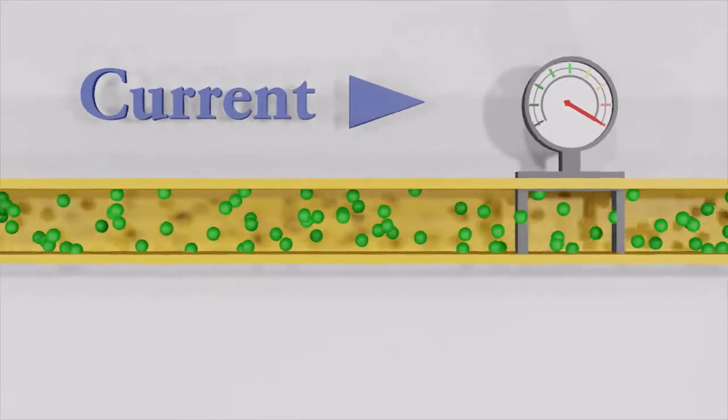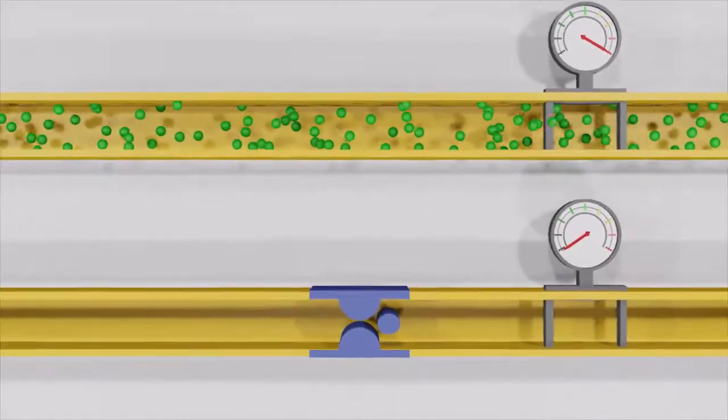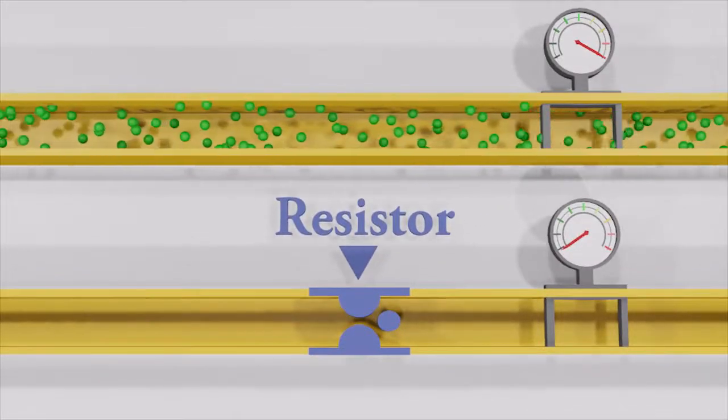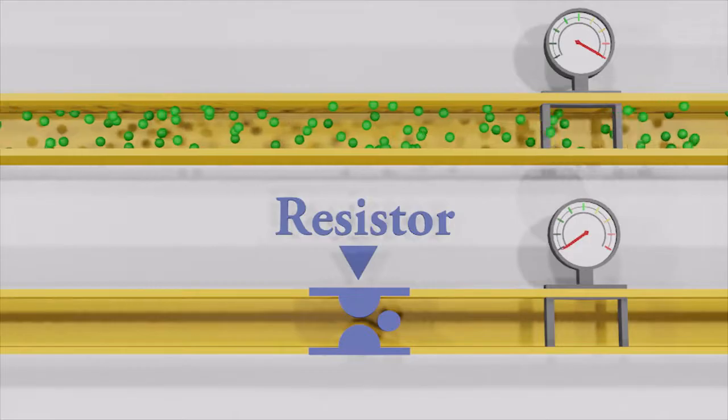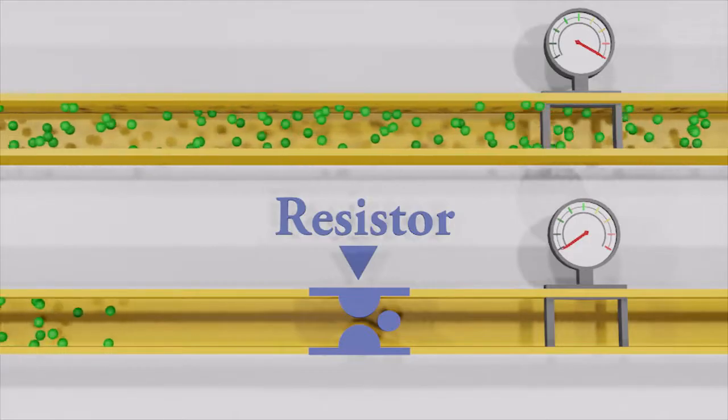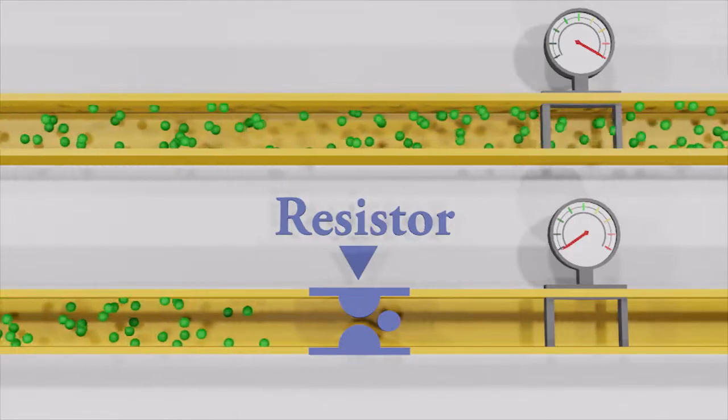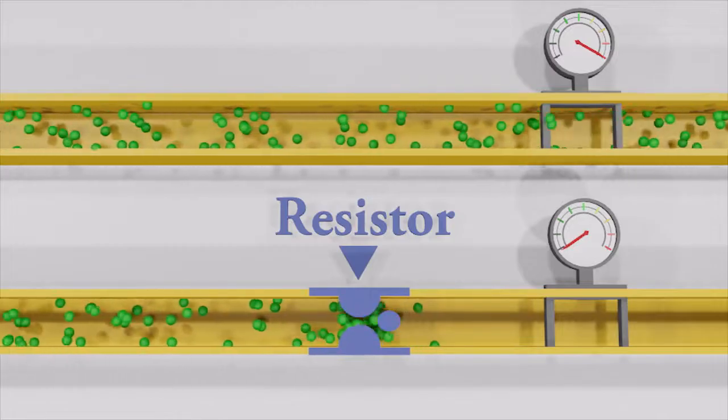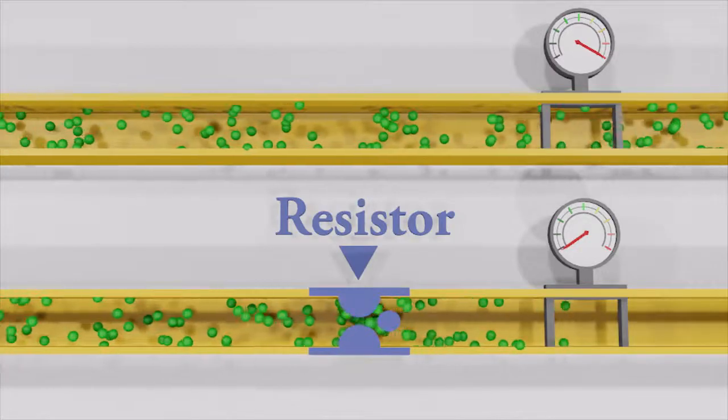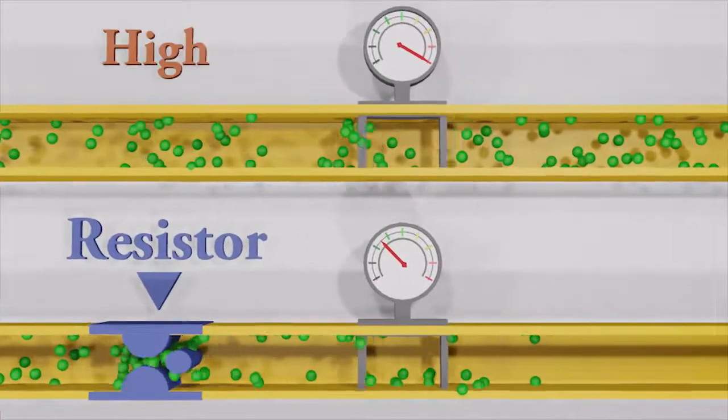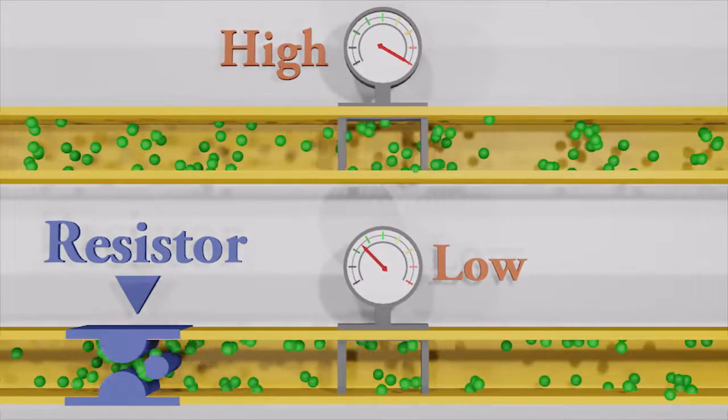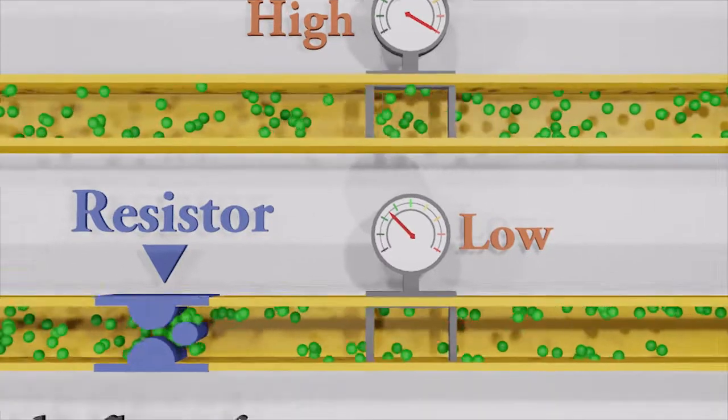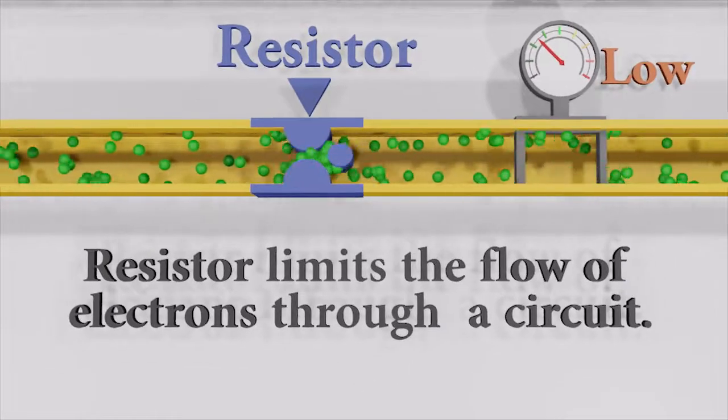Let's consider another conductor, but it has a resistor. Let's apply the same amount of voltage like the first one. Electrons start to flow, but electrons have no other option. They have to go through the resistor. Let's look at the ammeter reading. It's less than the first reading because the resistor limits the electron flow.